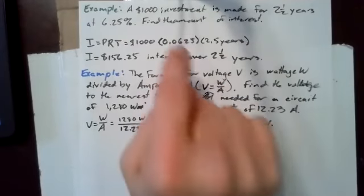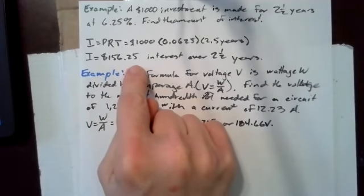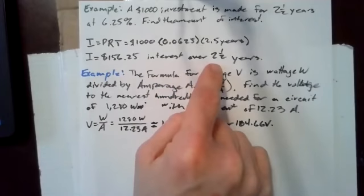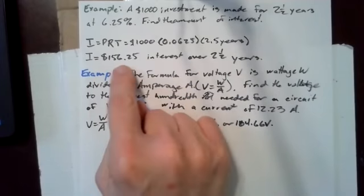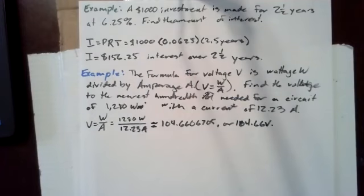If we multiply all of this together, we get I equals 156.25. Sorry, $156.25 interest over two and a half years.